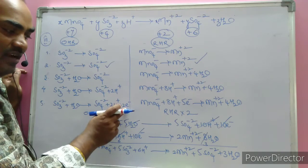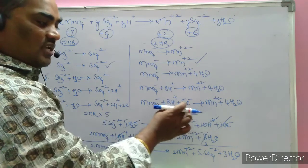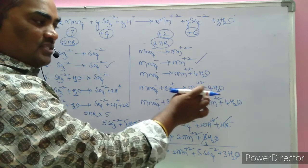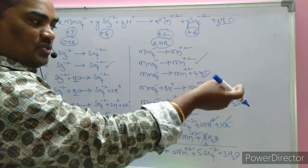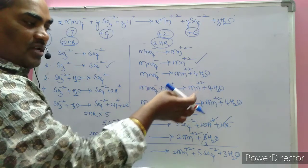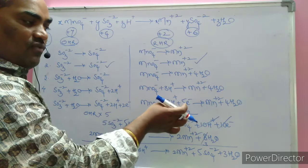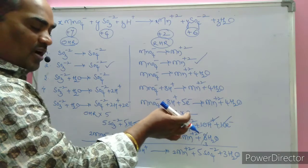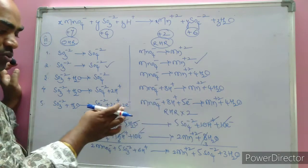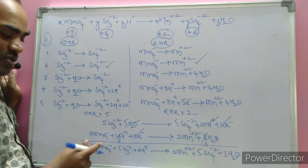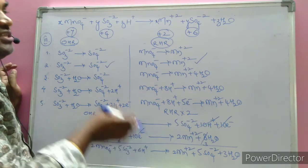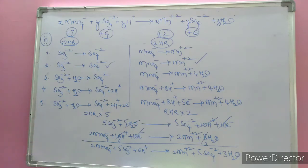For the reduction half: the left-hand side charge including 8 H⁺ becomes +7, and the right side is +2, so 5 electrons are placed on the left. To cancel the electrons, multiply the oxidation half by 5 and the reduction half by 2. On combining, the final coefficients are 2, 5, 6. This is how it is done at board level examinations.